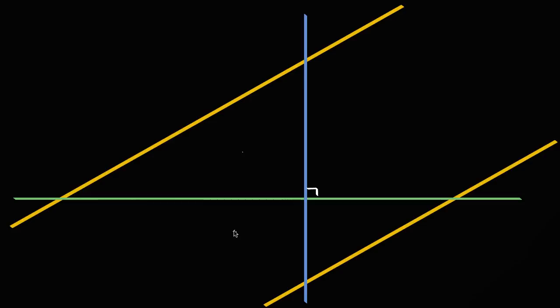From this, I'm going to use some parallel line angle properties to establish that this triangle and this triangle are similar, and then use that to establish that both of these yellow lines have the same slope. So let me label some points here: point A, point B, point C, point D, and point E.